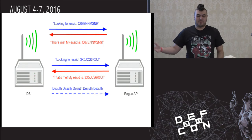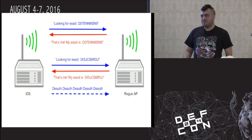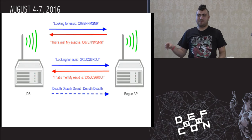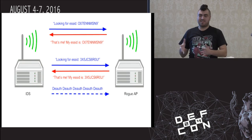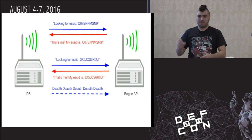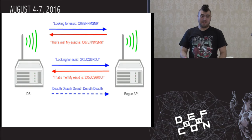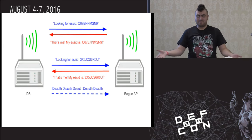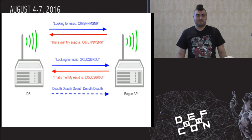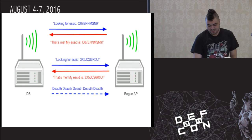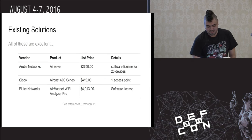We send another probe request for a second randomized hash string. If we get a single BSSID — a single piece of hardware — responding to both of these, that's probably a good indication that it resembles one of those citrus-like devices we've been seeing a lot. In that case, you can try to locate it, deauth it, or take appropriate action.